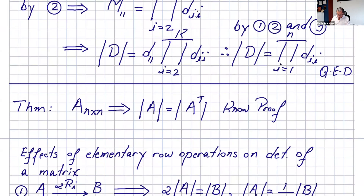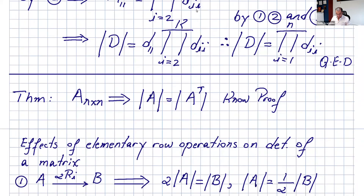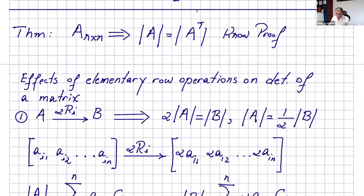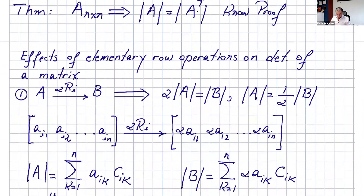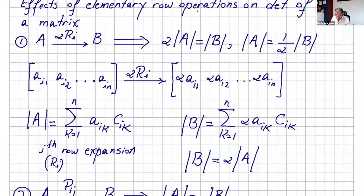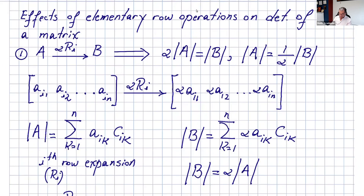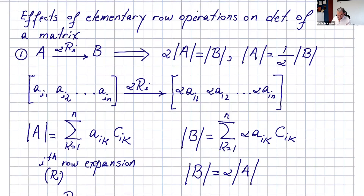I said the determinant of A is the same as the determinant of its transpose. That's one of the properties of the determinant. Please know the proof and do some research on the proof of that theorem.